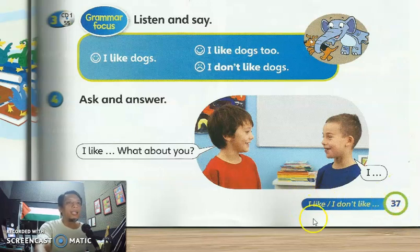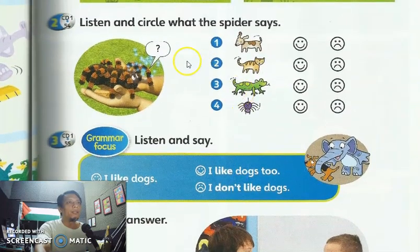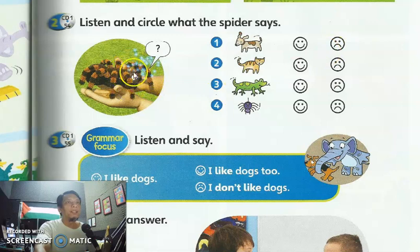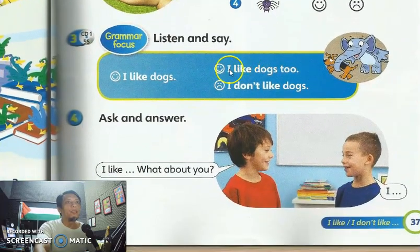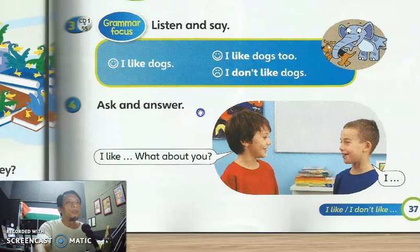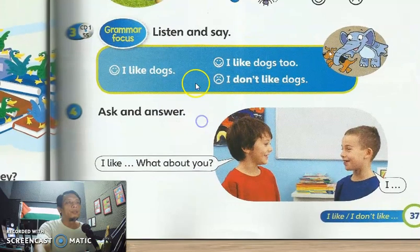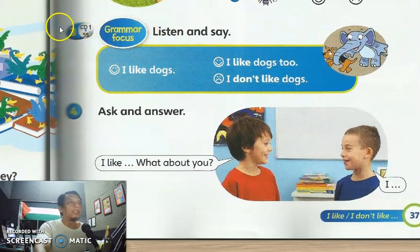This is about 'I like' and 'I don't like.' I believe that you have learned about this — activity number two, numbers one, two, three, and four are about like and dislike — whether the spider, the dogs, the cats like the result or not. I believe that you can understand that one.